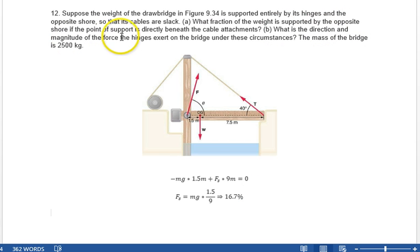What is the direction and magnitude of the force the hinges exert on the bridge under these circumstances? Okay. So now, we're going to look at some of the forces. We've got the force up here. We've got a force up here. And we have the weight down here. And the sum of all these forces adds to zero, because the bridge isn't going anywhere. Let's just put this was part A.